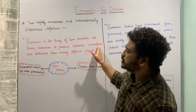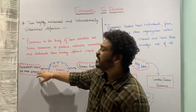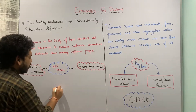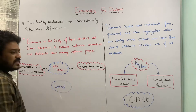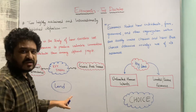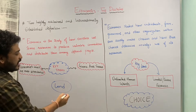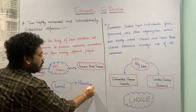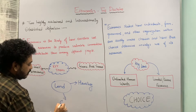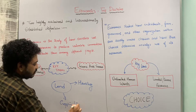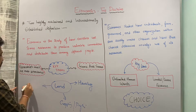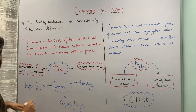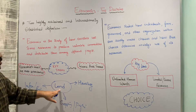Scarce resources need to be used efficiently. Let's look at this with the help of an example — land. We know that land area is limited as far as the surface of the earth is concerned, and it has certain alternative uses: it can be used for housing, for cropping or agriculture, or for infrastructural development such as roadways, railways, and highways.